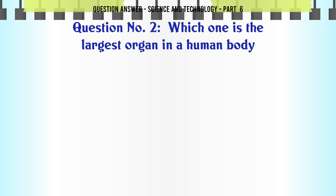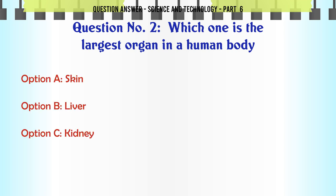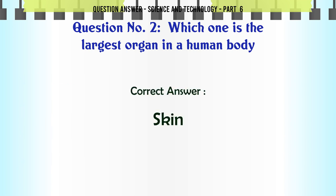Which one is the largest organ in a human body? A. Skin. B. Liver. C. Kidney. D. Lung. The correct answer is Skin.